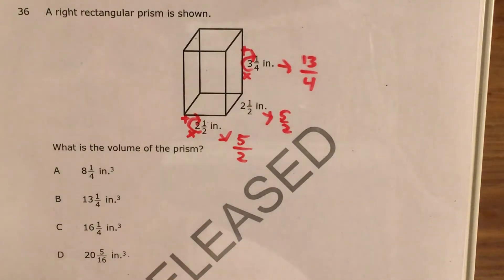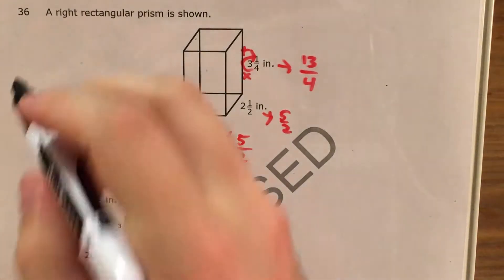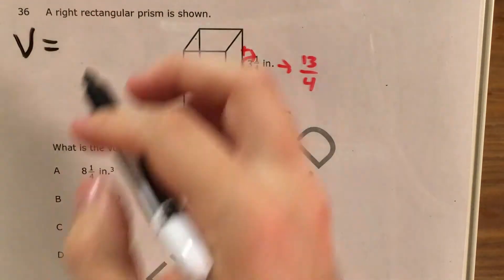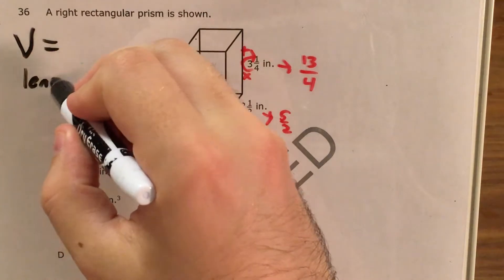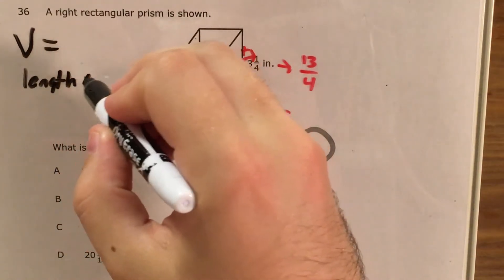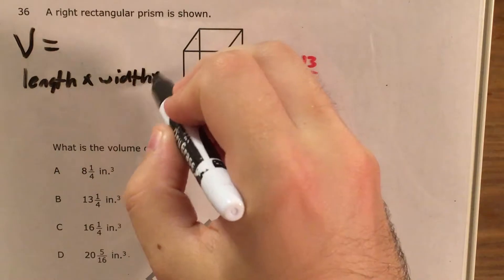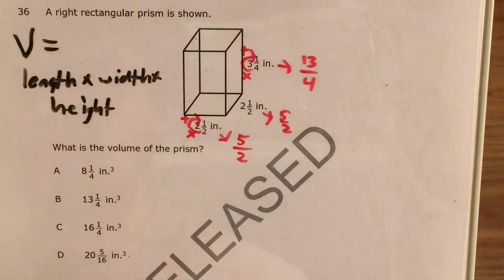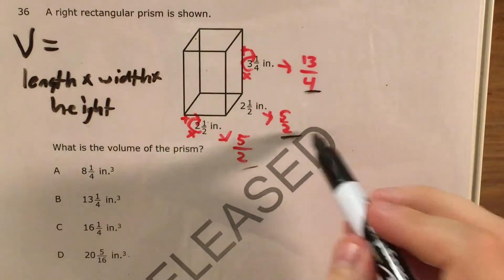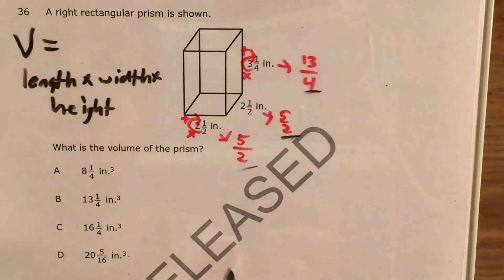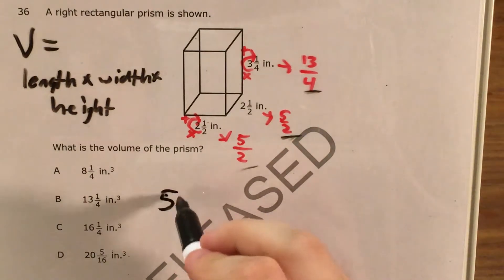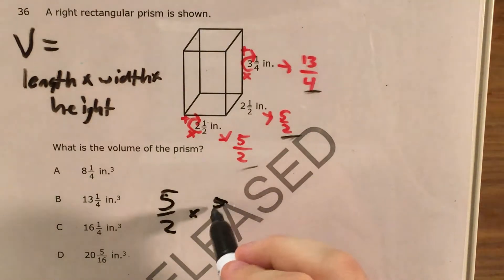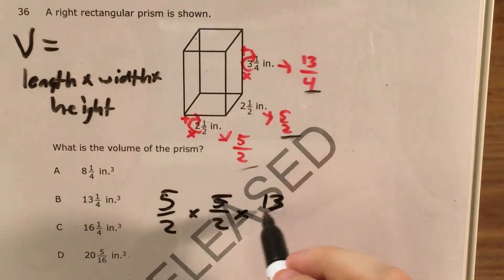Now I'm trying to find the volume of this prism, and just to remind myself, my volume is going to be my length, my width, and my height all multiplied together. So 5 halves, 5 halves, and 13 fourths. I'm just going to go ahead and multiply all of these.